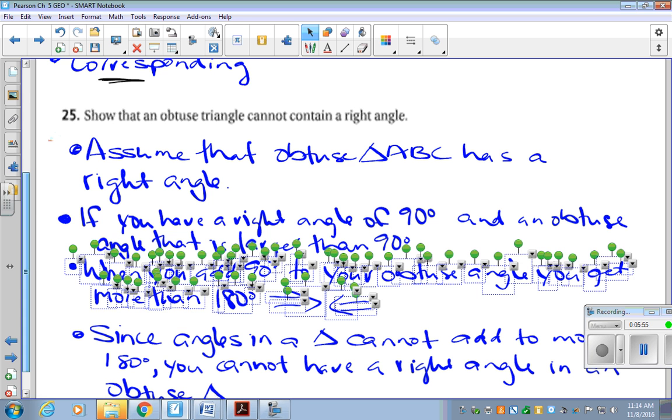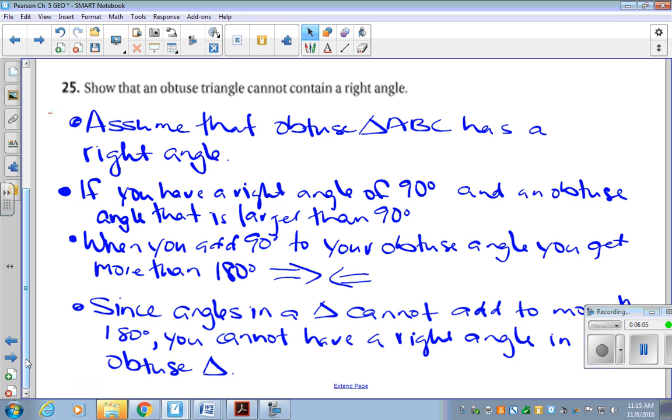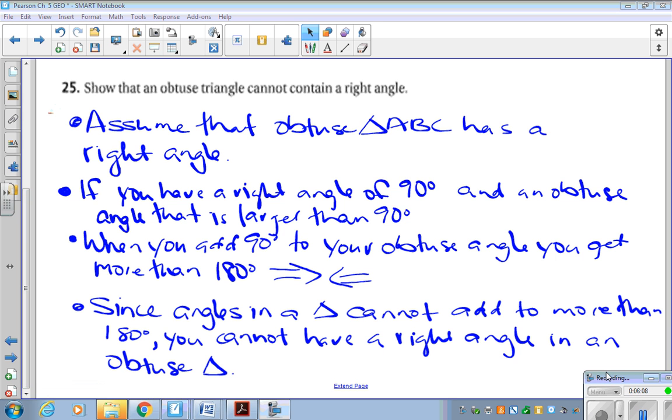then here's your contradiction. When you add 90 degrees to your obtuse angle, you get more than 180 degrees. That's a contradiction. So since angles in a triangle cannot add to more than 180, you cannot have a right angle in an obtuse triangle.